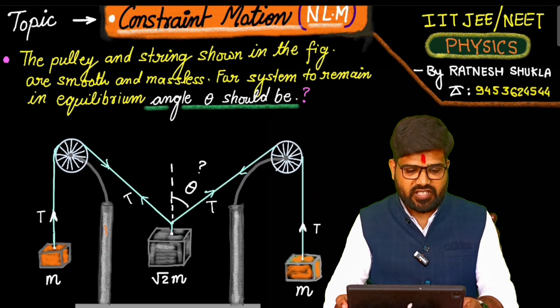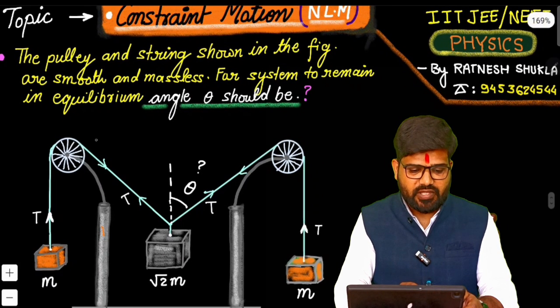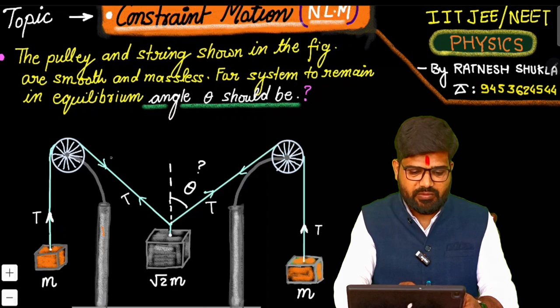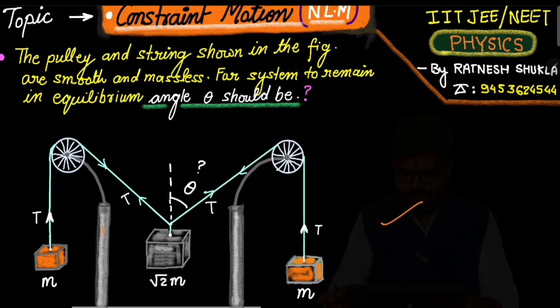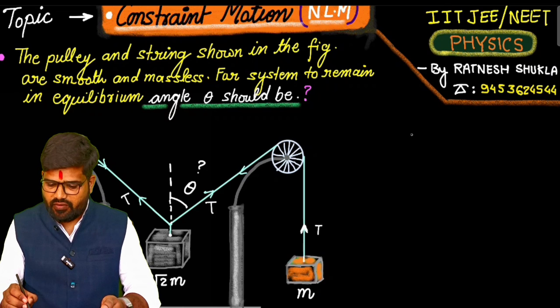Given that pulley and strings are frictionless means on both sides of the pulley the value of the tension will be same. Now see here, for a system to remain in equilibrium the net force acting on the system should be zero.